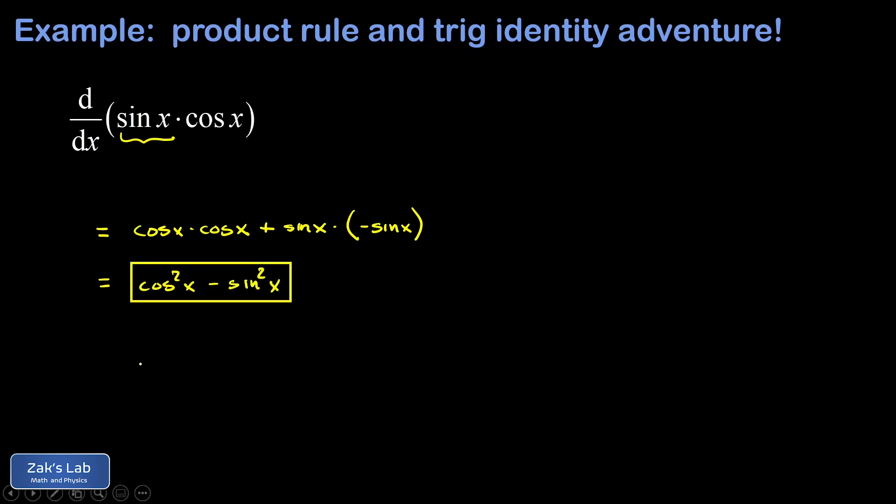Now that's a perfectly valid way to write the answer but I do recognize a trig identity here. Cosine squared x minus sine squared x. Well that turns out to be the cosine of 2x.